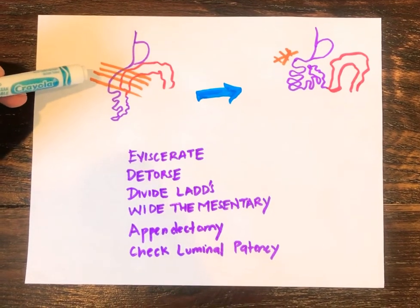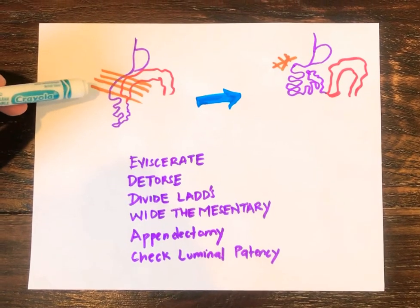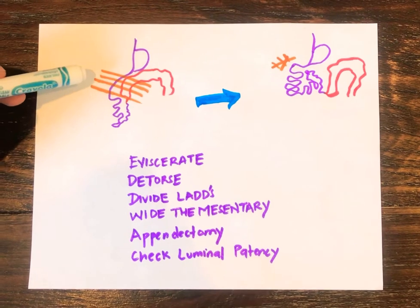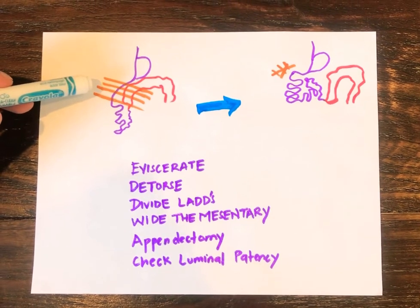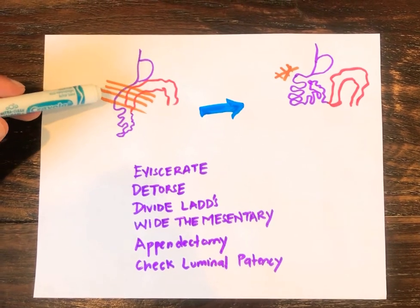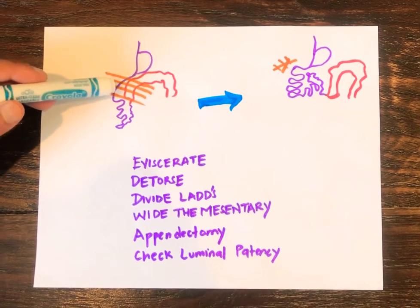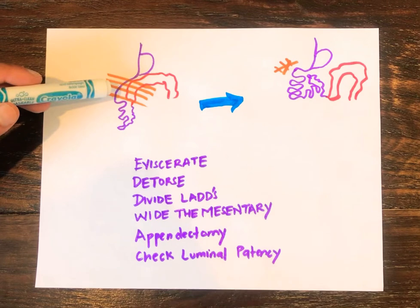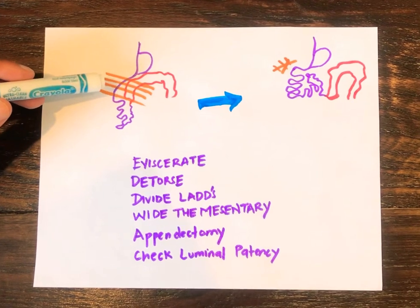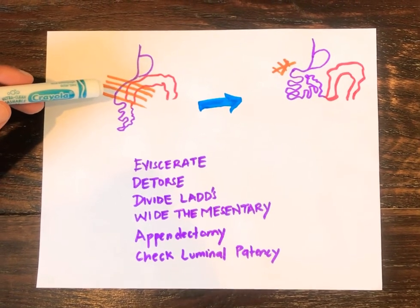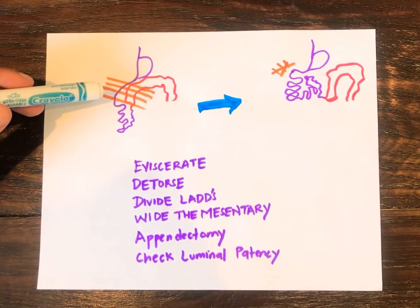This baby has malrotation. These are the Ladd's bands, which are represented in orange. As you can see, they are causing obstruction of the duodenum and also the right colon, which is tucked up in the right upper quadrant by these bands.